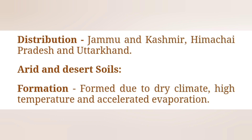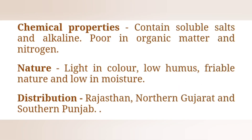Sixth: Arid and desert soil. Formation: formed due to dry climate, high temperature and accelerated evaporation. Chemical properties: contain soluble salts and alkaline, poor in organic matter and nitrogen. Nature: light in colour, low humus, friable and low in moisture. Distribution: Rajasthan, northern Gujarat and southern Punjab.